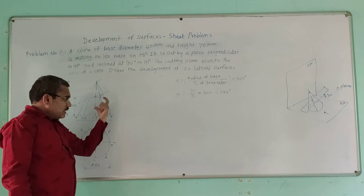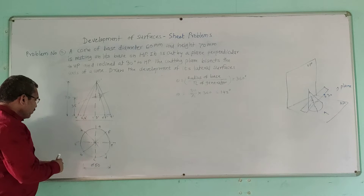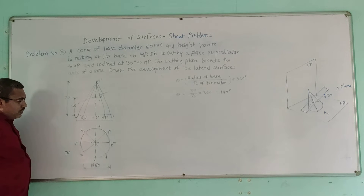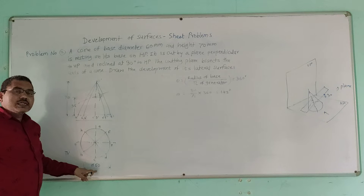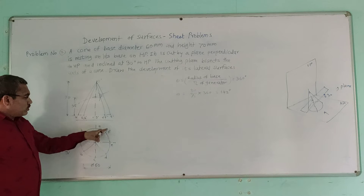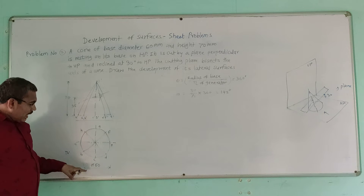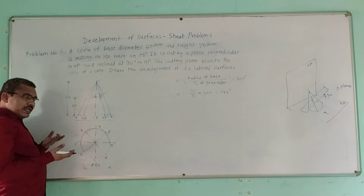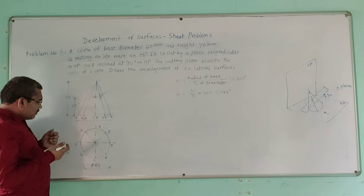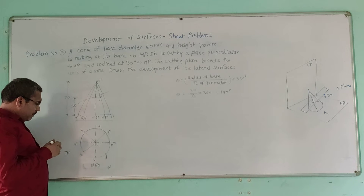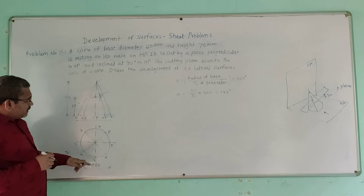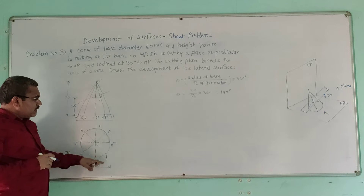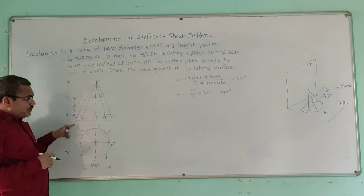After understanding the correct position of the cone and cutting plane, draw the orthographic views. The top view of this cone is a circle of diameter 60 mm. Draw a circle with diameter 60 and divide it into 8 equal parts, naming them A, B, C, D, E, F, G, H.